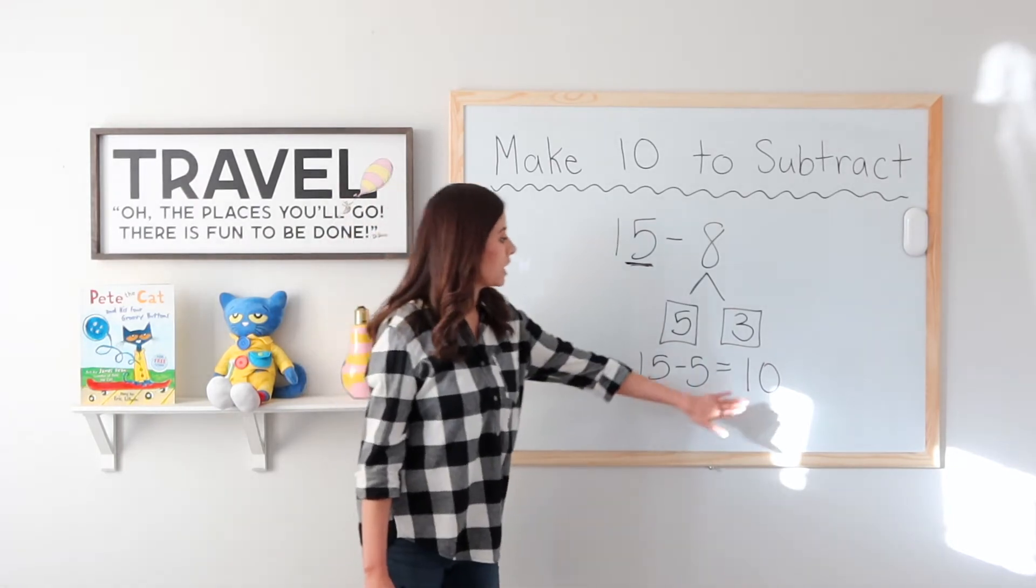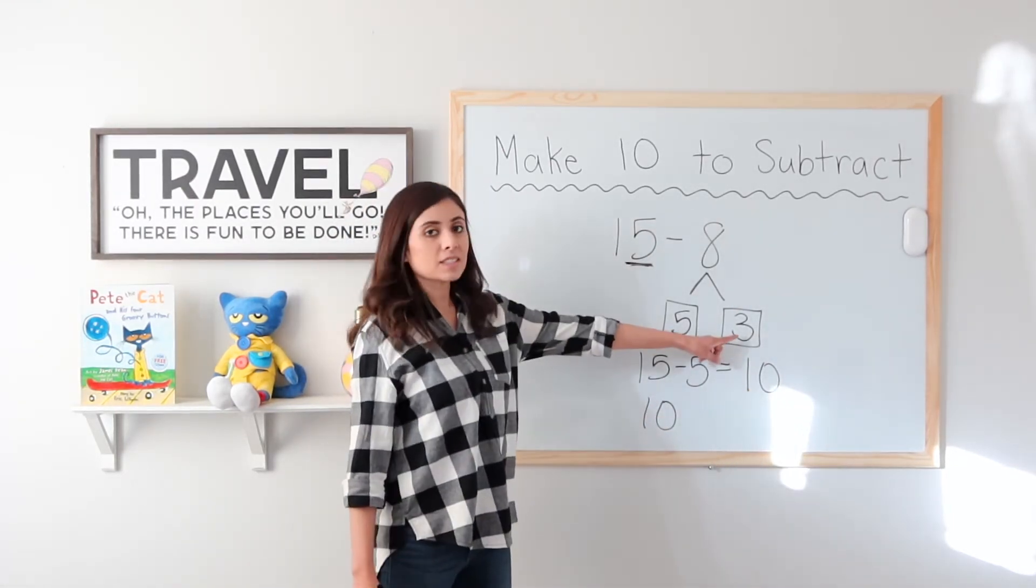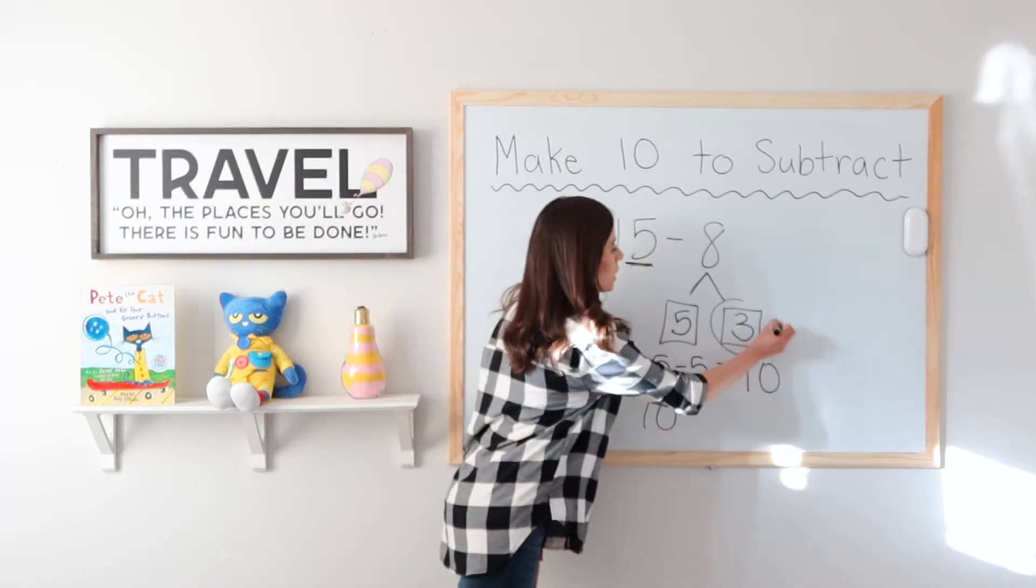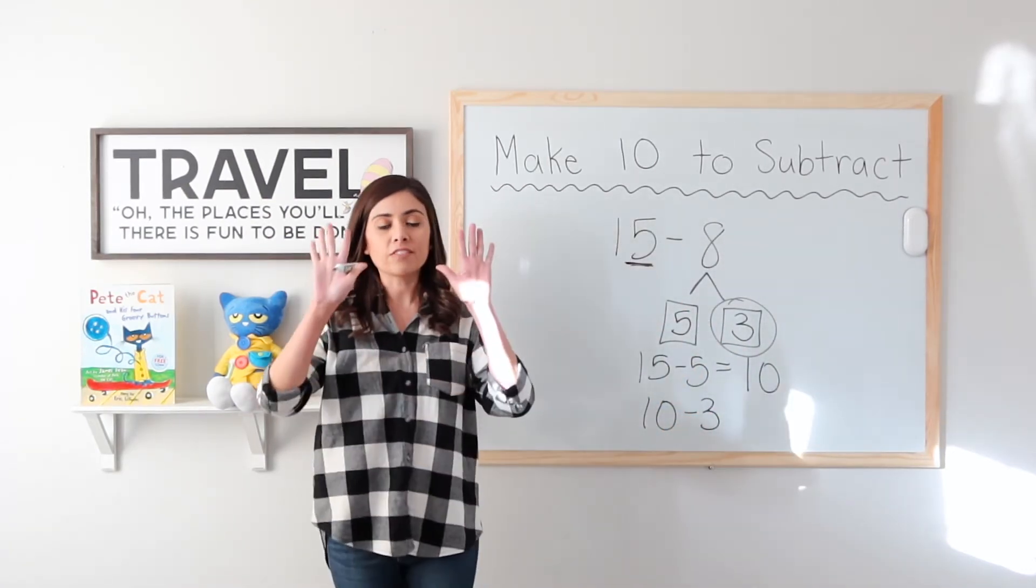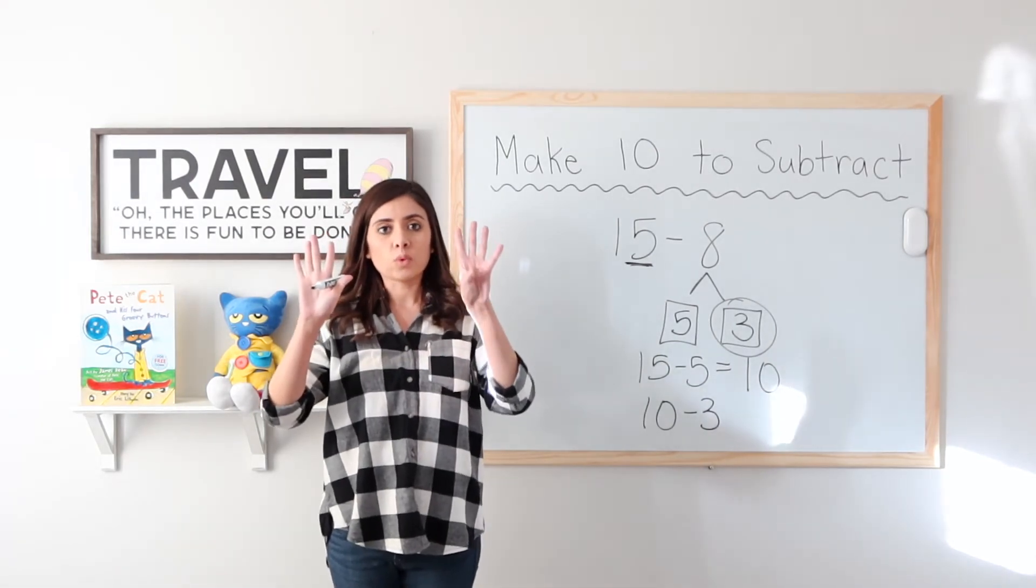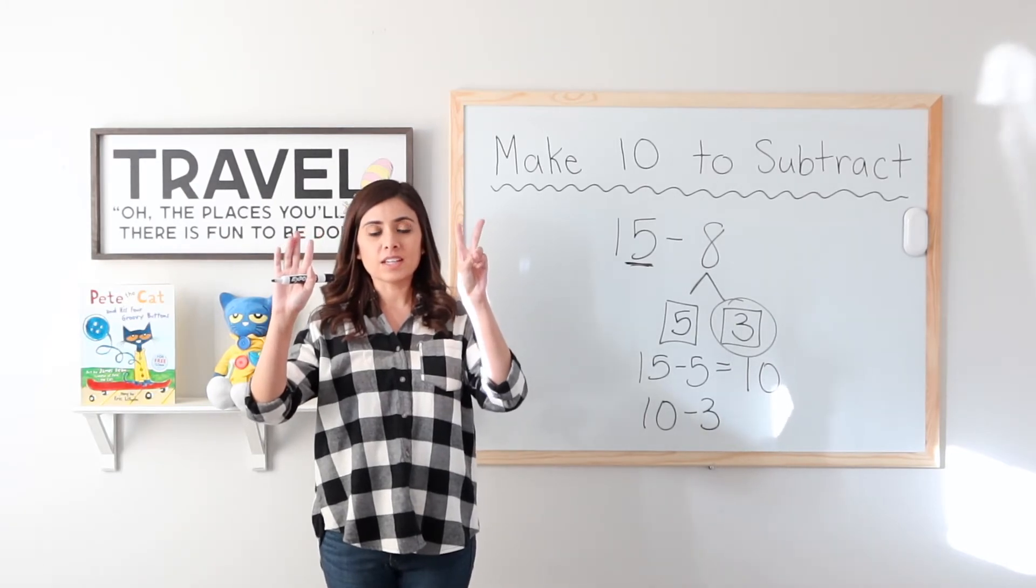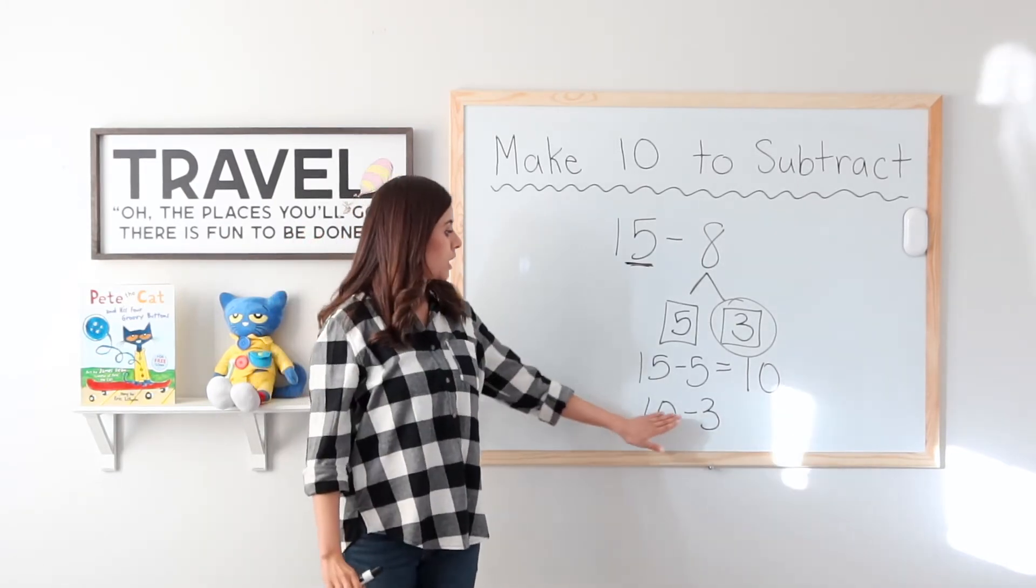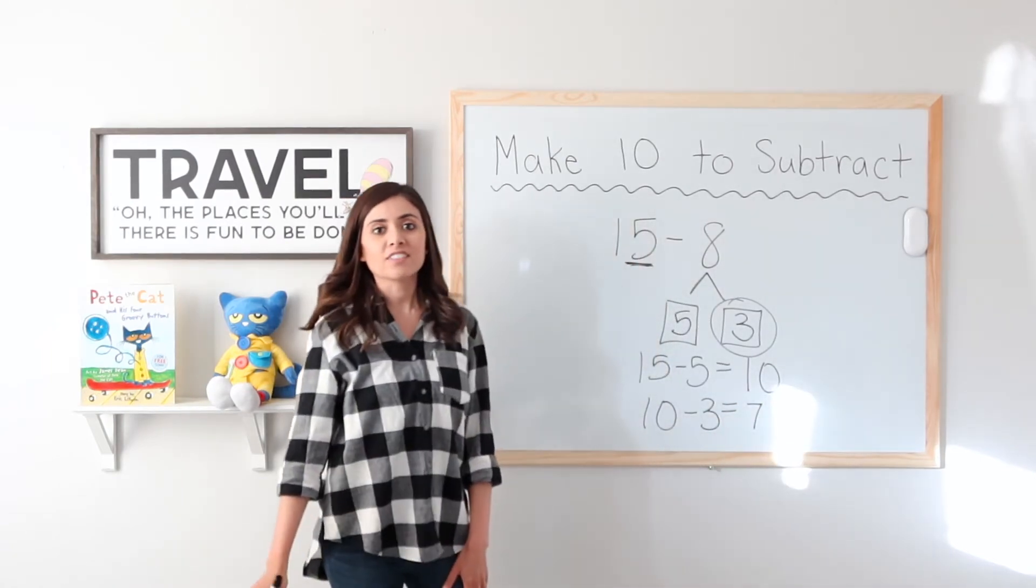Step 3. Take your answer, 10, and subtract the second part, which is this one right here. 3. 10 minus 3. I have 10 fingers. Put 3 down. 1, 2, 3, 5, 6, 7. So 10 minus 3 equals 7.